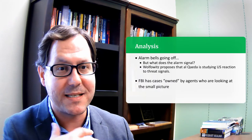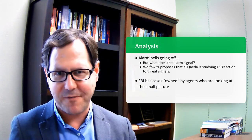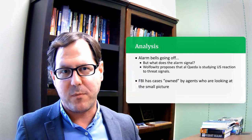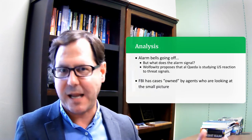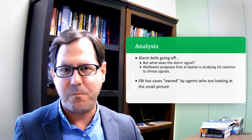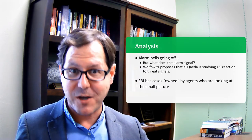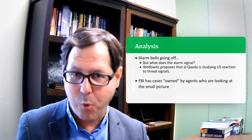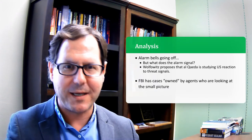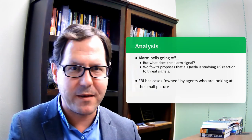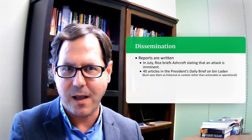Another problem Hastedt flags is this idea of cases being owned by agents, particularly within the FBI. An FBI agent isn't necessarily thinking about whether Al-Qaeda is intending to launch an attack on the United States. The FBI is organized around the idea of building a court case against a particular person. So the kind of information being put together is relevant to that very narrow problem, which didn't necessarily help in resolving the overall intelligence failure of not seeing, recognizing, or responding to a threat from Al-Qaeda that was incoming.